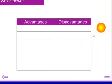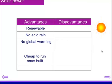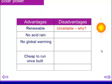Advantages and disadvantages. Advantages are: it's renewable; there's no acid rain produced from byproducts; no global warming associated because there's no production of carbon dioxide; and it's cheap to run once it's built. Disadvantages are: it's unreliable — because of clouds, seasons, changes in atmospheric conditions, and crucially, night and day.